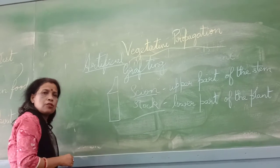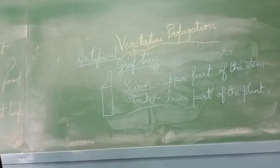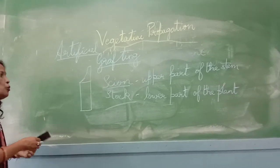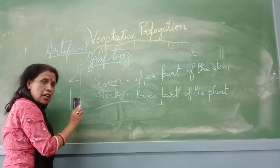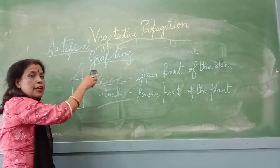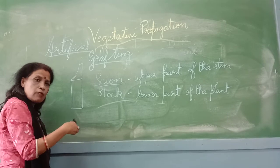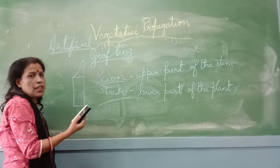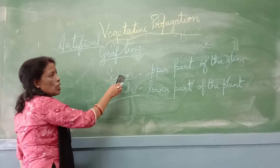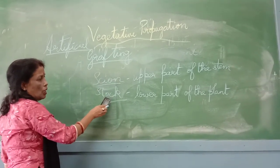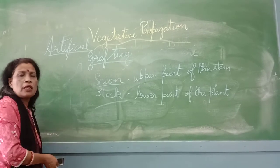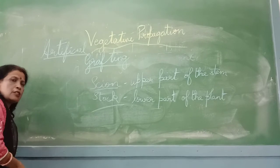By this method of grafting, you can get new varieties with both flowering plants as well as root-bearing plants. Remember: scion is the upper part of the stem, and stock is the lower part of the plant, which is the root region. Next class we will discuss in detail how grafting is done.